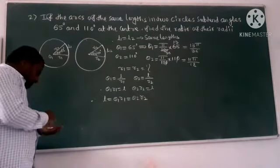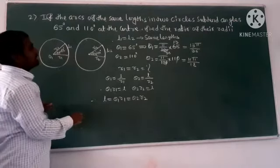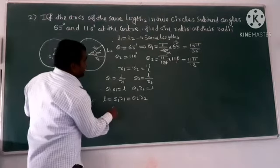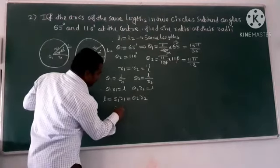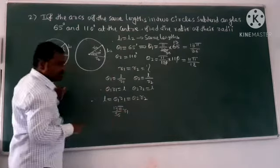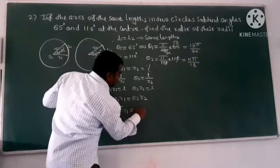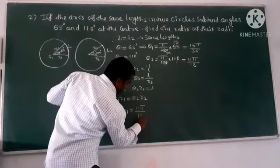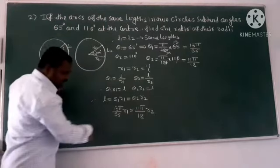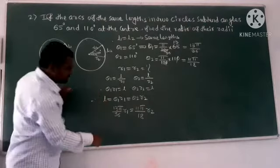And the next observation. Theta 1 is in radians. So we are going to express from theta 1. Theta 1 is here, 13 pi divided by 36 into R1. So here theta 2, 11 pi divided by 18, into R2. So R1, R2, cross multiplication.